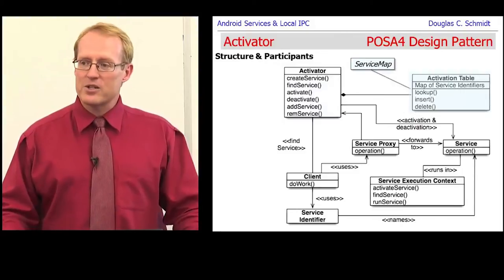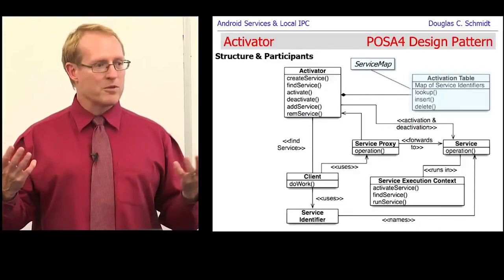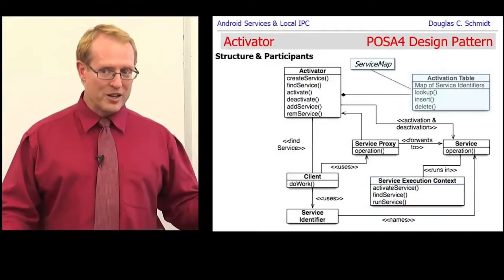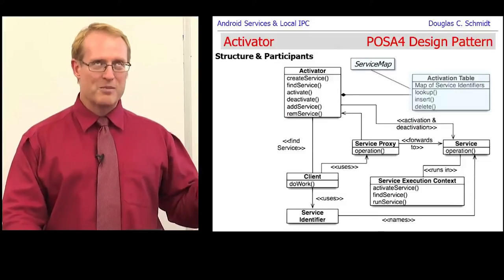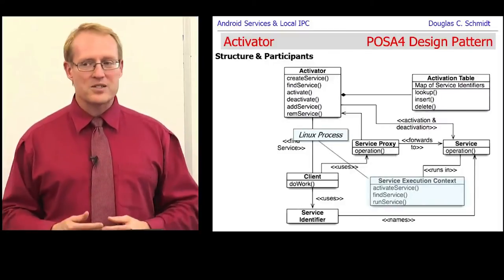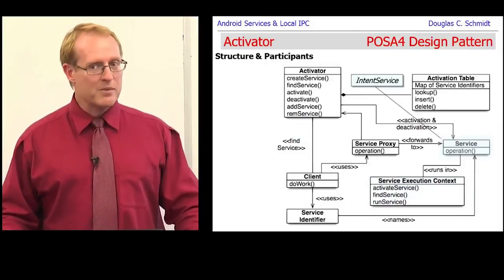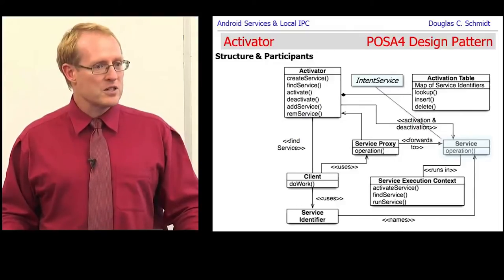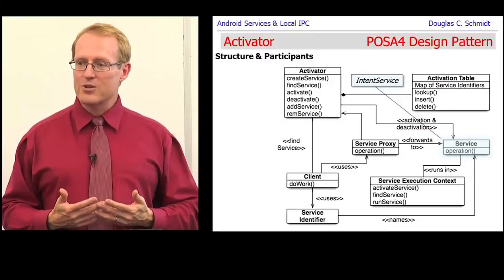The activator makes use of something called the activation table, which keeps track of what's up and running to handle new requests from clients. In Android, this is part of the activity manager service called the service map, and the activator is the activity manager service. Then we have the service execution context - where the actual work gets done, which in Android is a Linux process or more precisely a thread within a Linux process. Finally, there's the service itself, which is some subclass or implementation of intent service that does the actual work.